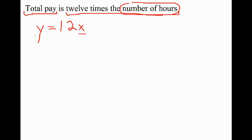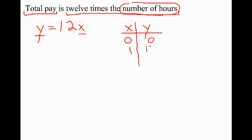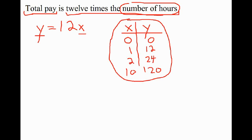This is another example of a mathematical relationship between two pieces of information: the total number of hours and our total pay. Total pay depends on the number of hours. If we construct a table of values using x for number of hours and y for total pay: zero hours gives zero dollars, one hour gives twelve dollars, two hours gives twenty-four dollars, and ten hours gives one hundred twenty dollars.